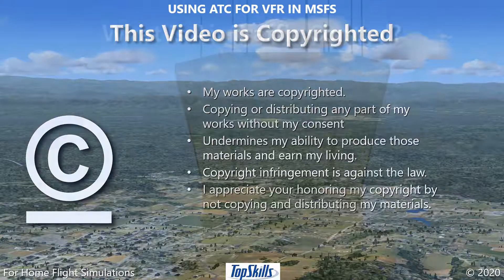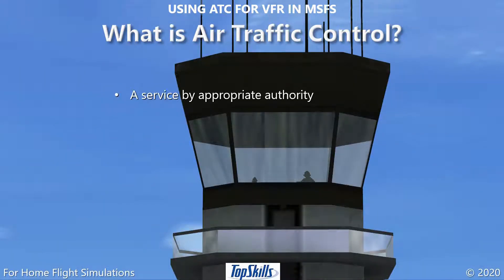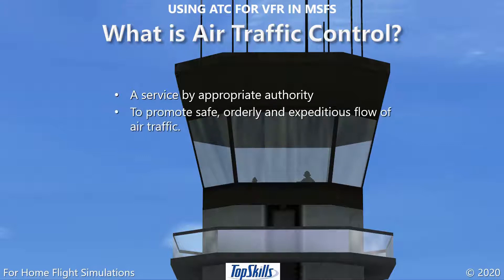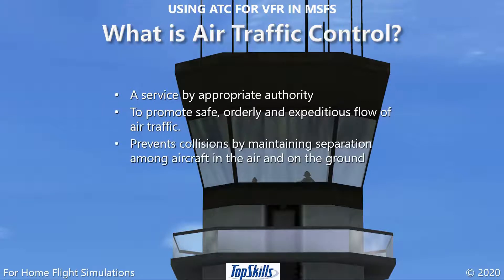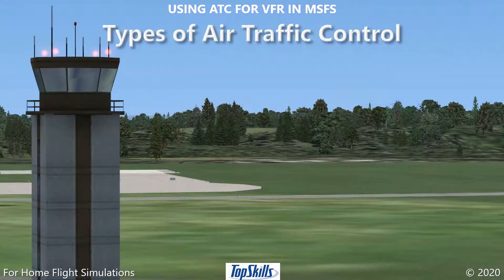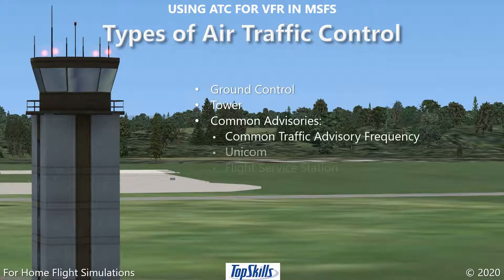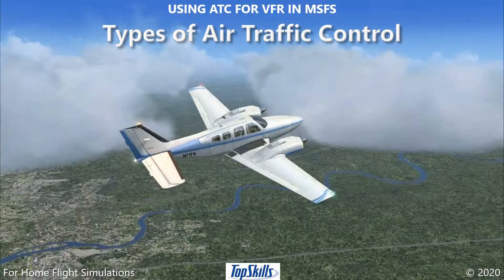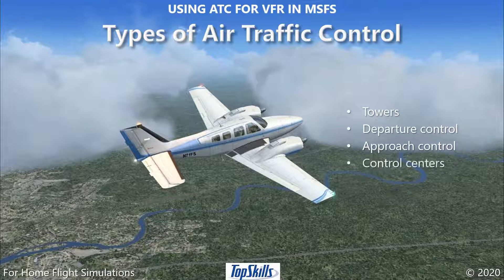Air traffic control is a service operated by an appropriate authority to promote the safe, orderly, and expeditious flow of air traffic. It prevents collisions by maintaining separation among aircraft in the air and on the ground. It also provides weather reports and pilot advisories. In furtherance of these objectives, pilots must communicate with ATC and follow its instructions and clearances. At airports, pilots interact with ground control, the tower, common traffic advisories, and departure and approach. In the air, pilots interact with towers, departure, approach, and air route traffic control centers.